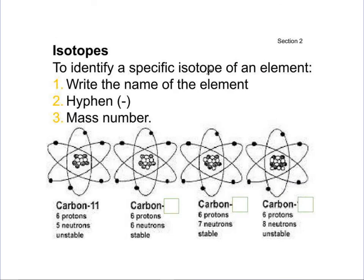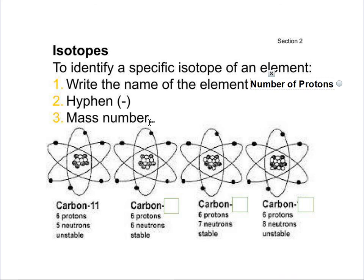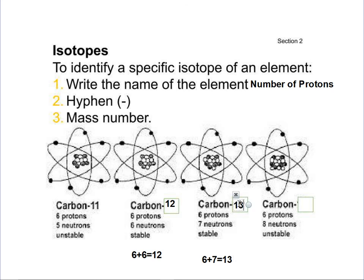To identify a specific isotope of an element, write the name of the element — given by the number of protons from the periodic table — then write a hyphen and the mass number. In the first equation: 6 protons plus 6 neutrons equals 12, so this is carbon-12. Six plus 7 is 13, so it's carbon-13. Six protons and 8 neutrons: 6 plus 8 gives you 14, so this is carbon-14. Remember, these are isotopes because they each have a different number of neutrons — 6, 7, and 8.